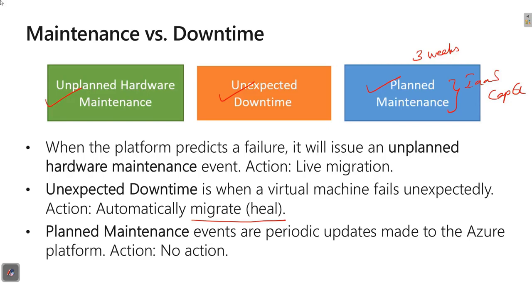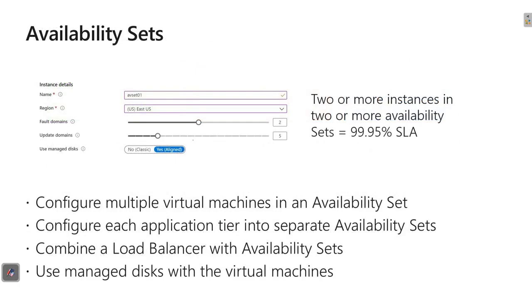Let's see what all the options are. In high availability we are going to see two different options. One is virtual machine in an availability set. Another one is virtual machine in an availability zone. We will start with availability set.